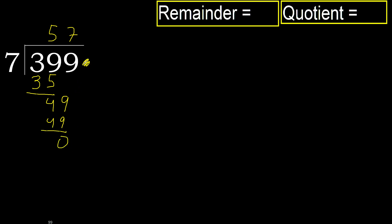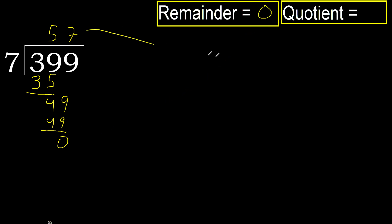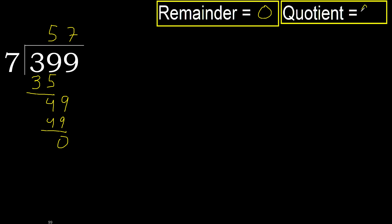That leaves no remainder, therefore finish it. 399 divided by 7 is 57.